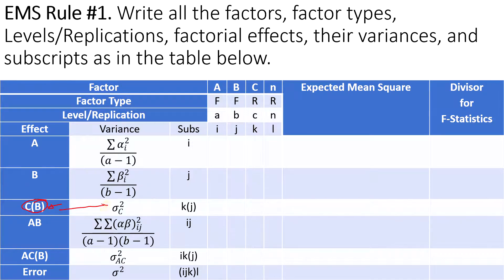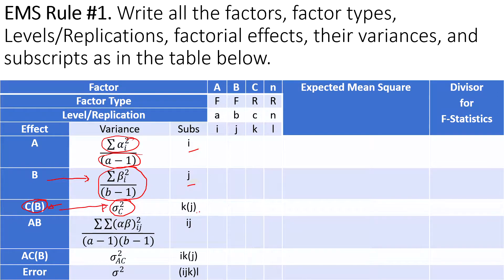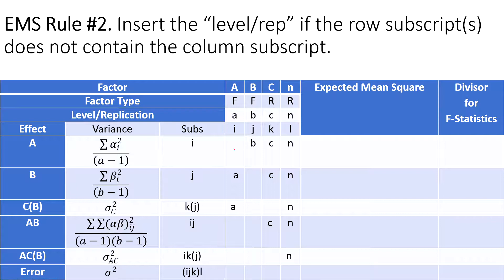For a random factor, the variance component is written as sigma-squared with the subscript of that effect. For a fixed effect, there is no variance component, so it is written as a summation of the effect squared — for example, beta for B and alpha for A — divided by the degrees of freedom. The table also lists all subscripts associated with each effect, whether the factor is fixed or random, and the number of levels: a levels of A, b levels of B, and n replications.